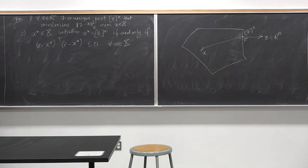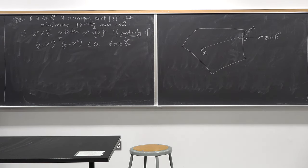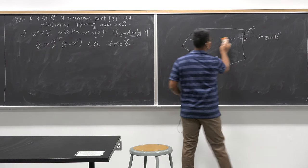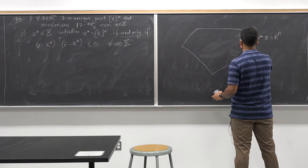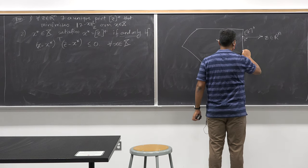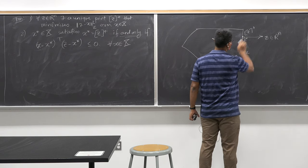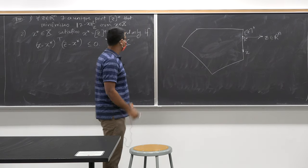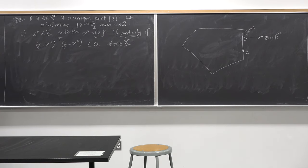It's an if-and-only-if relationship. If I pick another point X at the boundary, the vector X minus X-star and Z minus X-star can be exactly 90 degrees with each other, making the inner product equal to zero. So this condition is satisfied for all points within the set capital X.